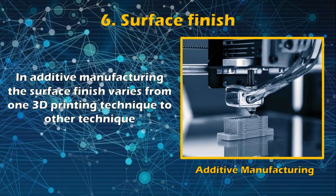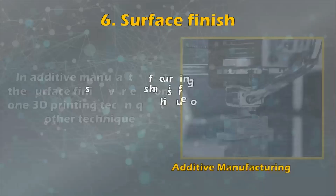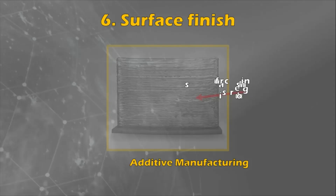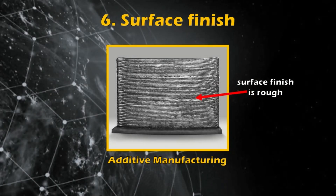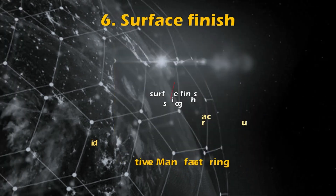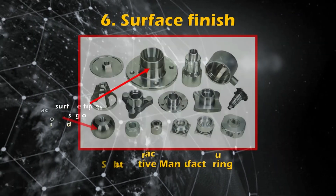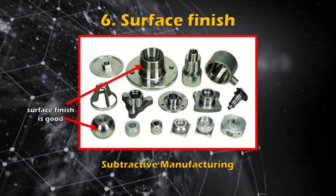In subtractive manufacturing, standard machining operations are drilling, turning, milling, threading, etc. Number six: surface finish. In additive manufacturing, the surface finish varies from one 3D printing technique to another — the surface finish is rough when compared to subtractive manufacturing. To get a smooth surface finish, post-processing of a part or product is carried out. In subtractive manufacturing, a good surface finish can be obtained.